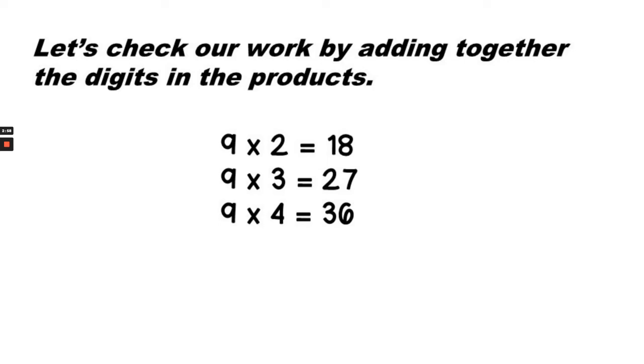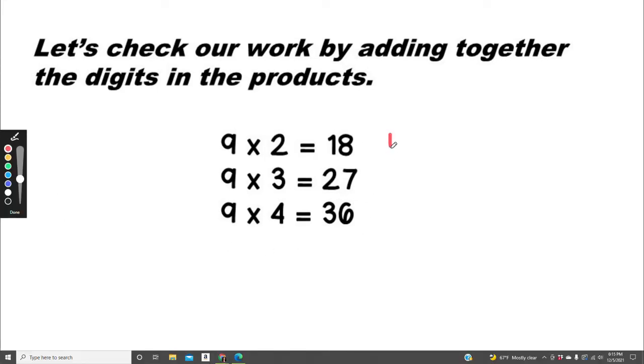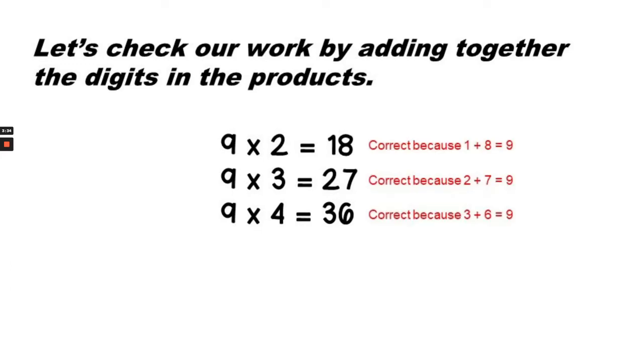Let's check our work by adding together the digits in the product. Remember that the two digits in the product should equal 9. So 1 plus 8 equals 9, 2 plus 7 equals 9, and 3 plus 6 equals 9. All of them are correct.